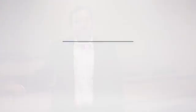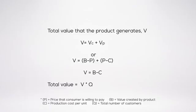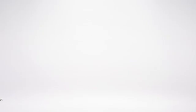The value of the technological opportunity is a combination of the value captured by consumers and the value captured by producers. So, if we define capital V as the total value the product generates, the total value is V subscript C plus V subscript P, which reduces to B minus C. Our goal is to calculate value at the level of the whole market, so we multiply V by Q, the total number of consumers. We need to estimate the price P and B, the per-unit value created for the customer, and then calculate B minus P.